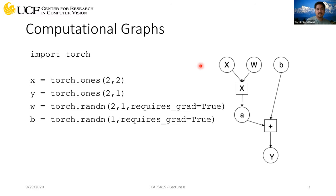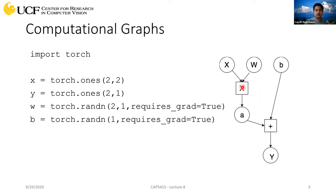In the computational graph, you will have your data flowing from an input towards the end where you make the predictions. In the same computational graph, you will have all the nodes where you are storing your weights and where you are making the calculations to do the feed forward process for your data. You can store gradients and make gradient updates when you back propagate. Whatever you do in your CNNs while you train, while you feed forward or back propagate, you need a computational graph.